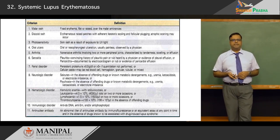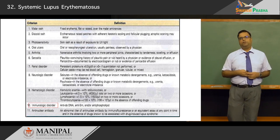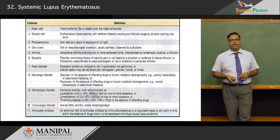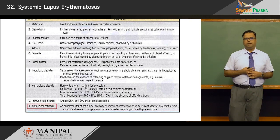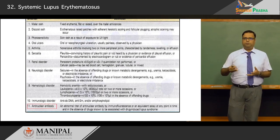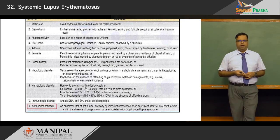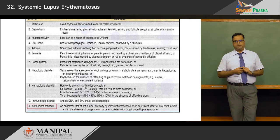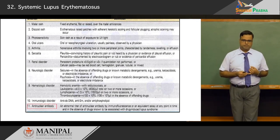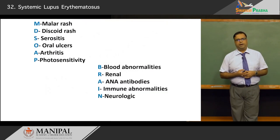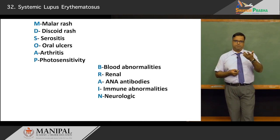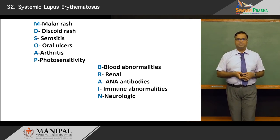Immunological criteria include anti-double-stranded DNA, anti-Smith, or anti-phospholipid antibodies demonstrated by indirect immunofluorescence. Anti-nuclear antibodies at an abnormally high titer, demonstrated by immunofluorescence in the absence of drug-induced lupus, complete the criteria. Meeting 4 out of 11 criteria confirms SLE. A useful mnemonic to remember the 11 criteria is MD SOAP BRAIN.